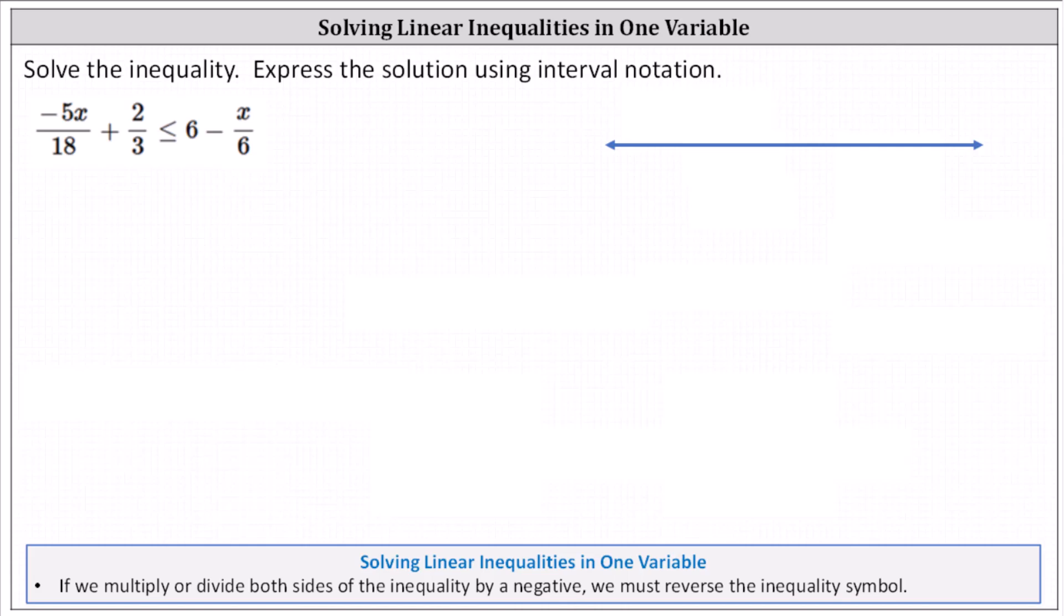Remember that we solve an inequality just like we solve an equation, except if we multiply or divide both sides of the equation by a negative, we must reverse the inequality symbol. Let's first write the equation as -5/18 x + 2/3 ≤ 6 - 1/6 x.